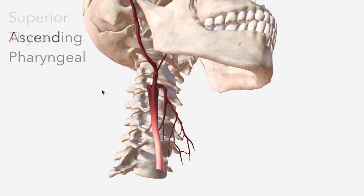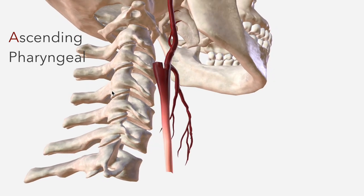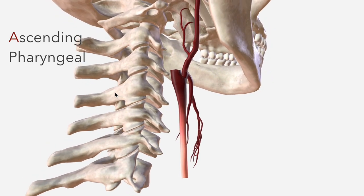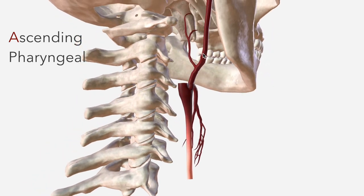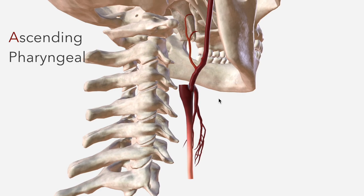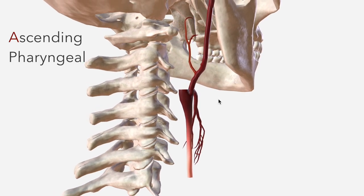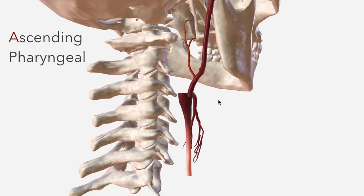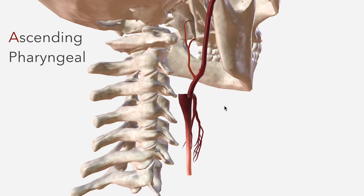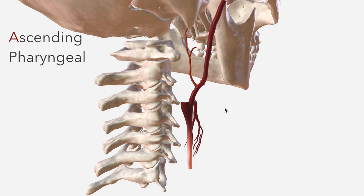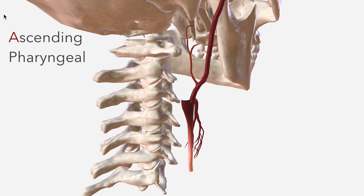We have A for the ascending pharyngeal next, which ascends medially and superiorly to supply much of the structures of the pharynx — muscular, the constrictors, stylopharyngeus. It also contributes to the supply of the hypoglossal, glossopharyngeal, and vagus nerves.